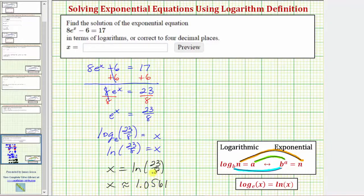Let's check our solution by verifying this value of x satisfies the original equation. Using the original equation, we'll substitute ln(23/8) for x. So we have 8e^(ln(23/8)) - 6 = 17. Let's simplify e^(ln(23/8)). Because the base is e and it's raised to the power of natural log, this simplifies perfectly to 23/8. So we have 8 times 23/8 minus 6 equals 17.